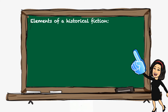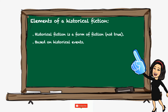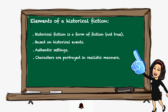Elements of a historical fiction. To know if a story is a historical fiction, you have to know the following: historical fiction is a form of fiction, so it's not a true story. It's based on historical events, with authentic settings, characters portrayed in realistic manners, and an artistic mix of fiction and historical facts.